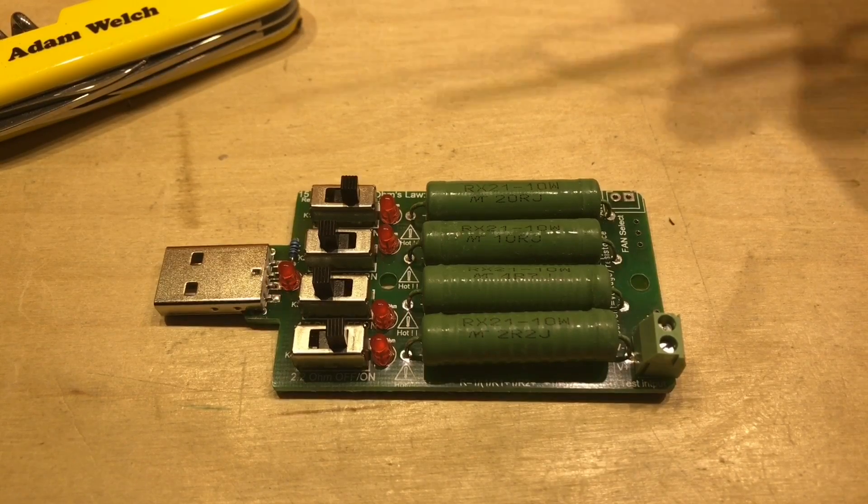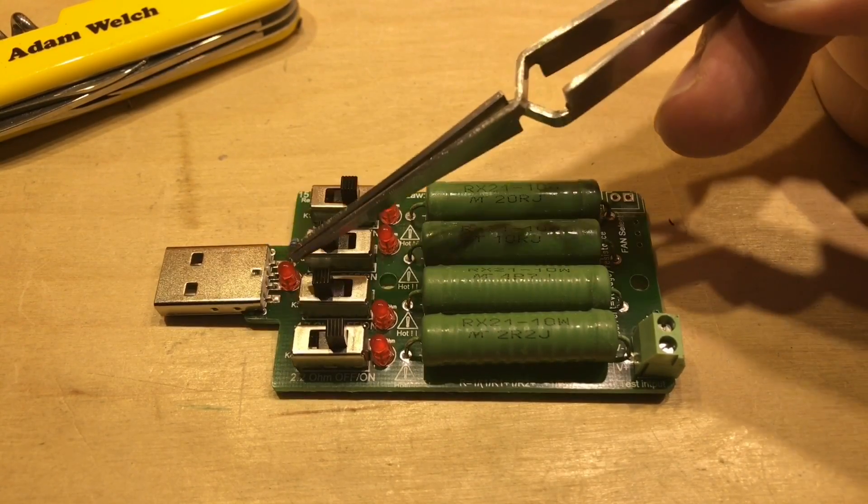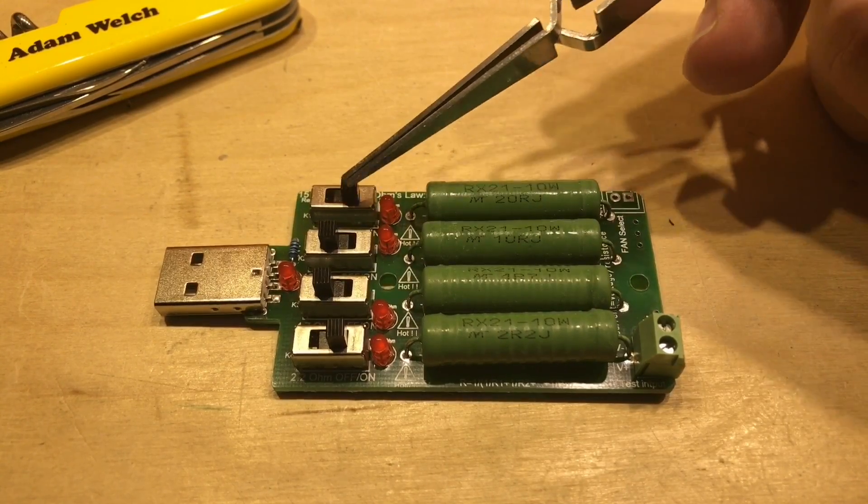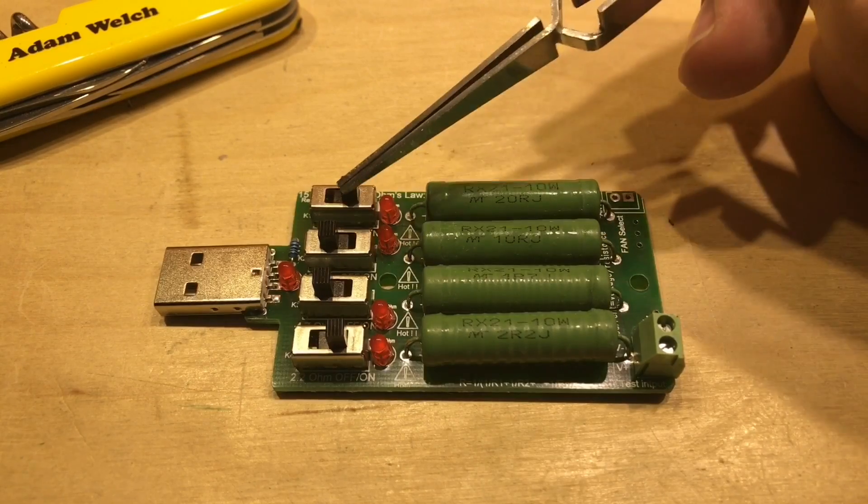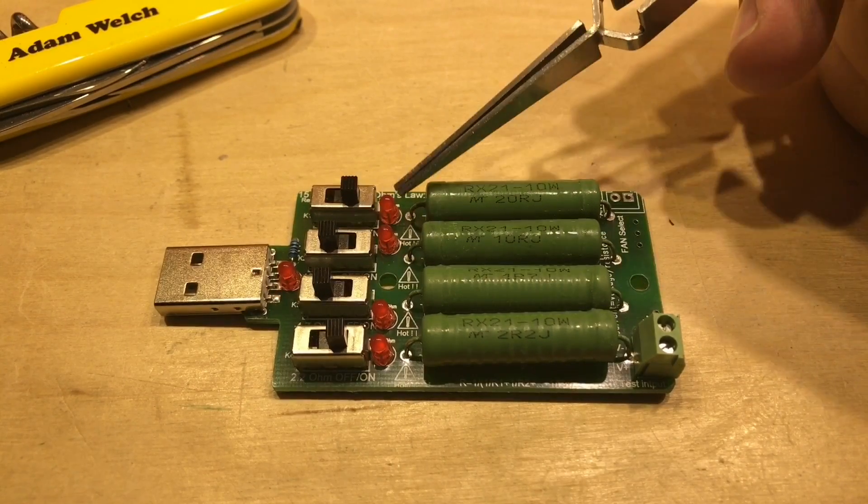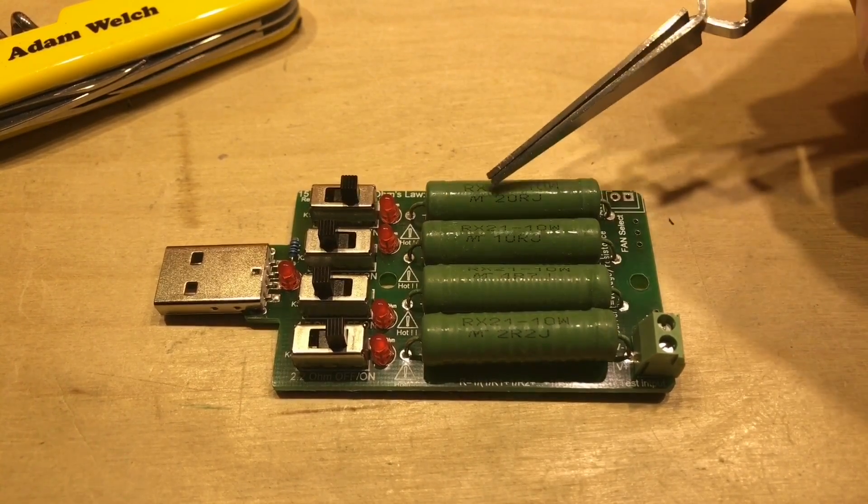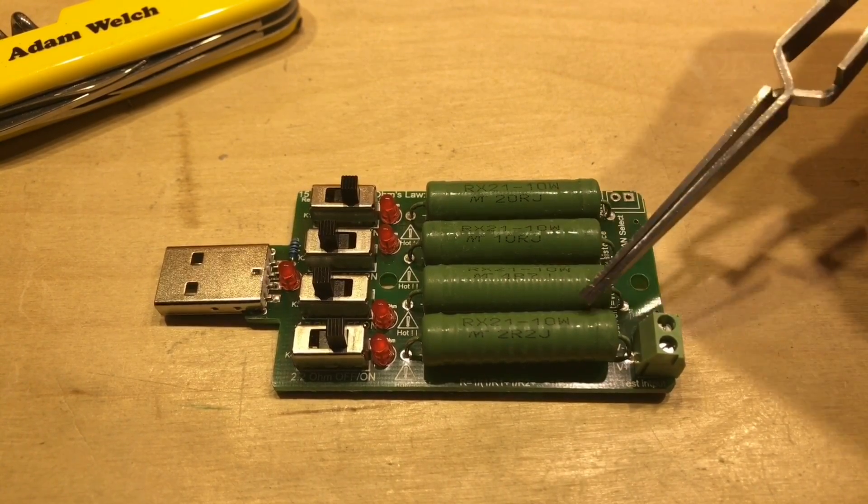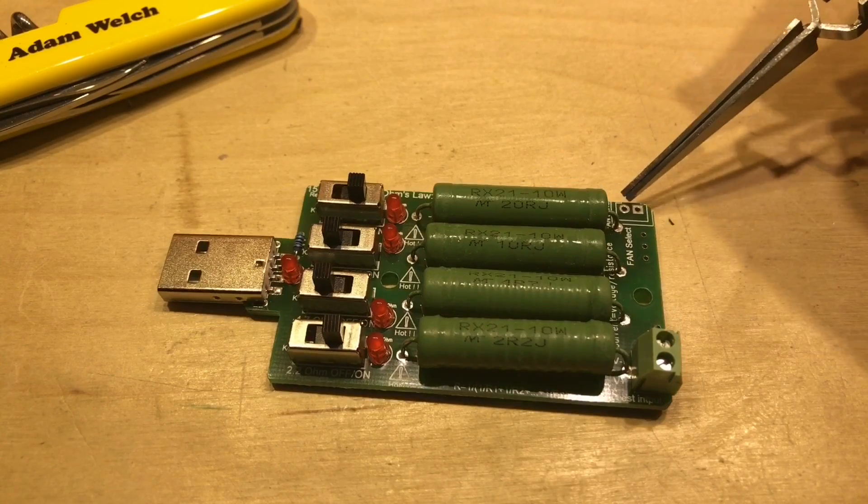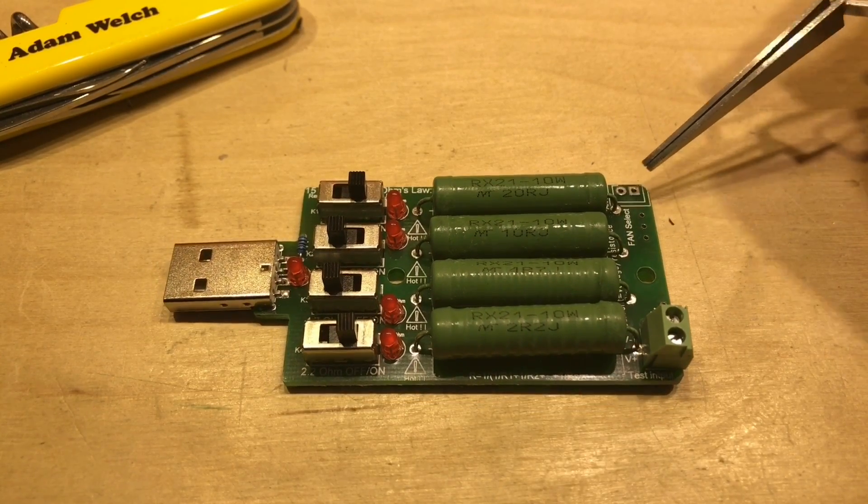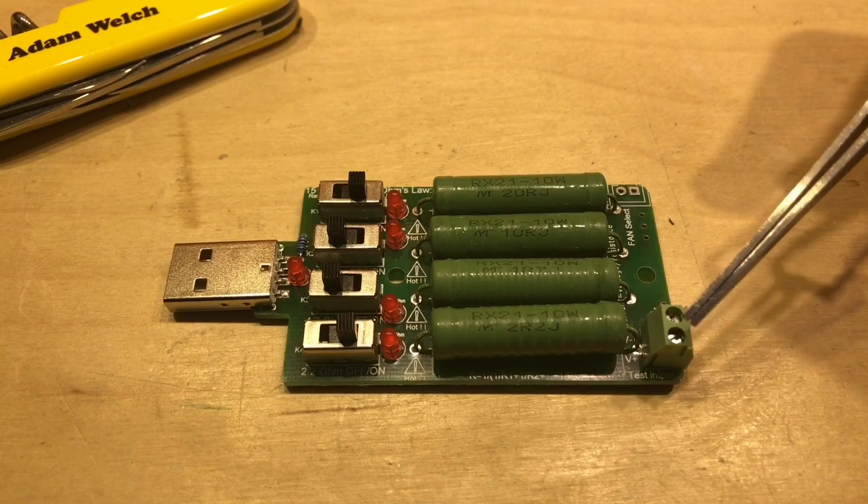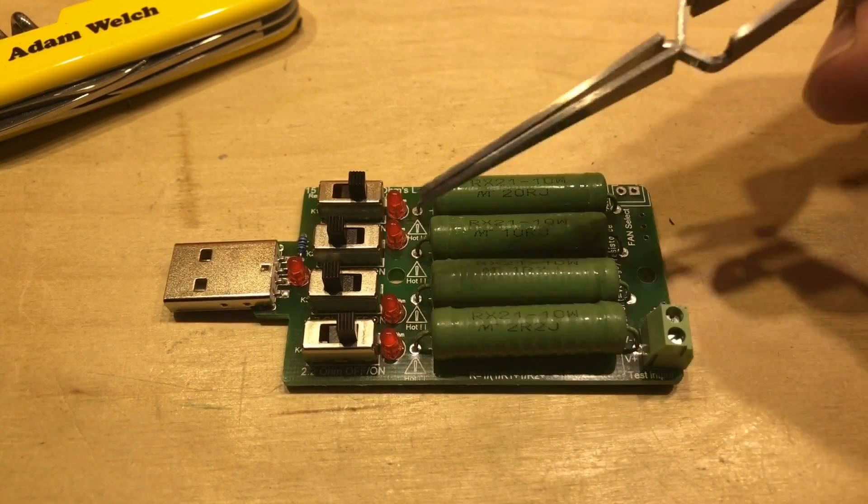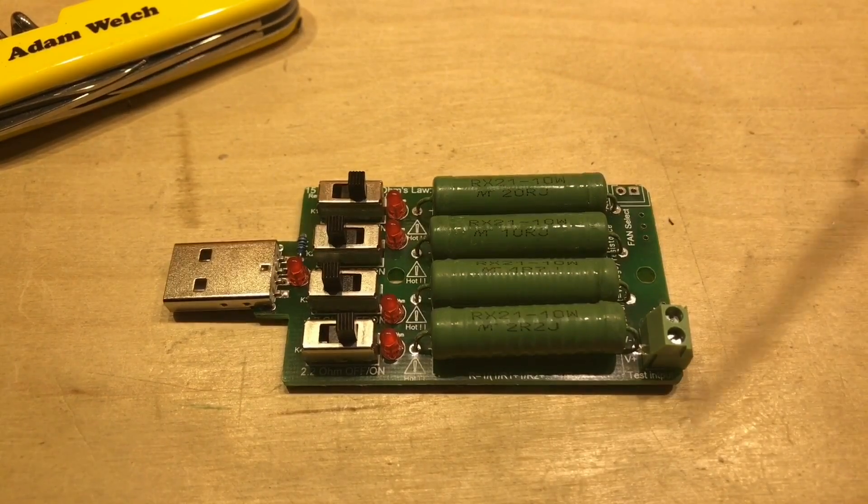So it's a reasonably straightforward item here. We've got the USB input over here and presumably this LED comes on when there's power. Four switches and four LEDs presumably indicating when each switch is on or off. And then four power resistors here which are all 10 watt resistors. Finally there's a fan connector here on the top right hand side and another terminal connection here presumably to put five volts in here if you're not testing something on USB.